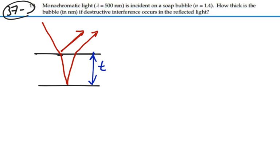Now going from a lower index to a higher index, the index being higher in the soap bubble, we would have that there would be a phase reversal on this first reflection. But no phase reversal on the second reflection. So we're going to have one phase reversal due to one of the reflections. So left just to that, that would give us destructive interference.